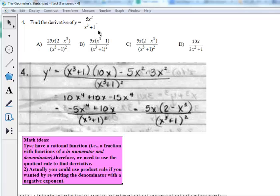So we need to use the quotient rule to find the derivative. So y prime is equal to the bottom times the derivative of the top minus the top, 5x squared, times the derivative of the bottom, which would be 3x squared, divided by the bottom squared, x cubed plus 1, quantity squared.